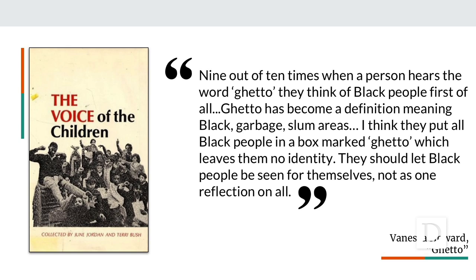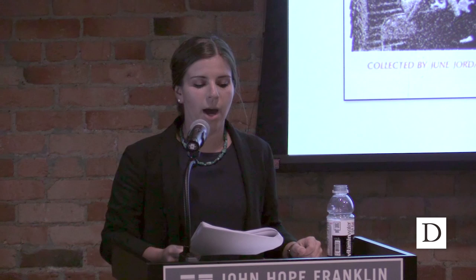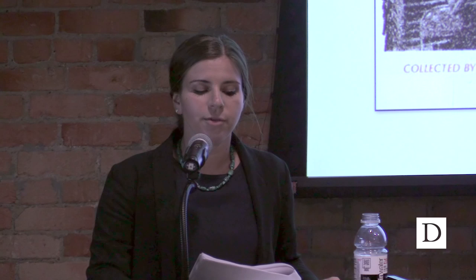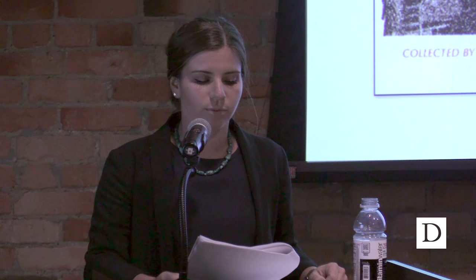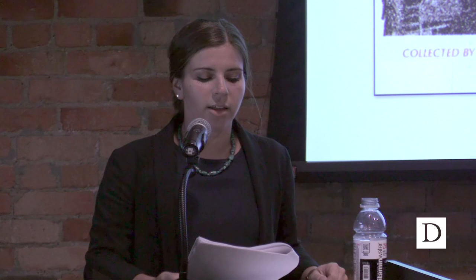In the opening prose poem, 14-year-old Vanessa Howard theorizes the power of stereotypes to reduce the complexity of individuals. She writes: '9 out of 10 times when a person hears the word ghetto, they think of black people first of all. Ghetto has become a definition meaning black, garbage, slum areas. To me, the word ghetto is just as bad as cursing. I think they put all black people in a box marked ghetto, which leaves them having no identity. They should let black people be seen for themselves, not as one reflection of all.' By teaching her students that they were authors with important things to say, Jordan directly challenged the ways mainstream media pathologized working class students of color as deprived, disadvantaged, unruly bodies in need of discipline.